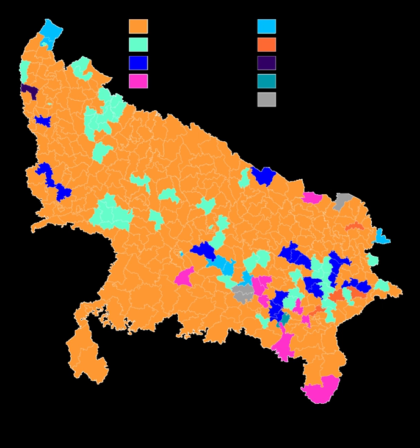Elections for the Goa State Assembly were held on 4 February 2017 with 83% turnout. The BJP, MGP, GFP, and two independents formed an alliance to win the election.